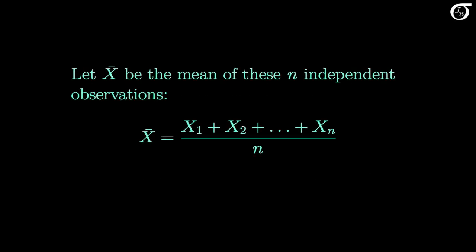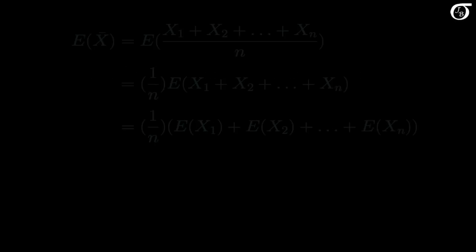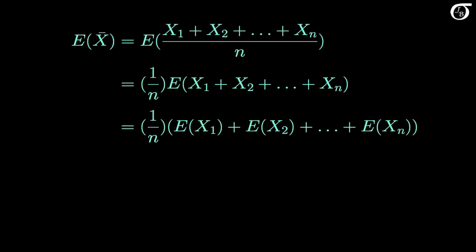Let X-bar be the mean of these n independent observations. X-bar is the sample mean — it is a statistic with a sampling distribution. In this video we are going to mathematically derive the mean and the variance of that sampling distribution. The expectation of X-bar equals the expectation of the sum of X1 through Xn, over n.